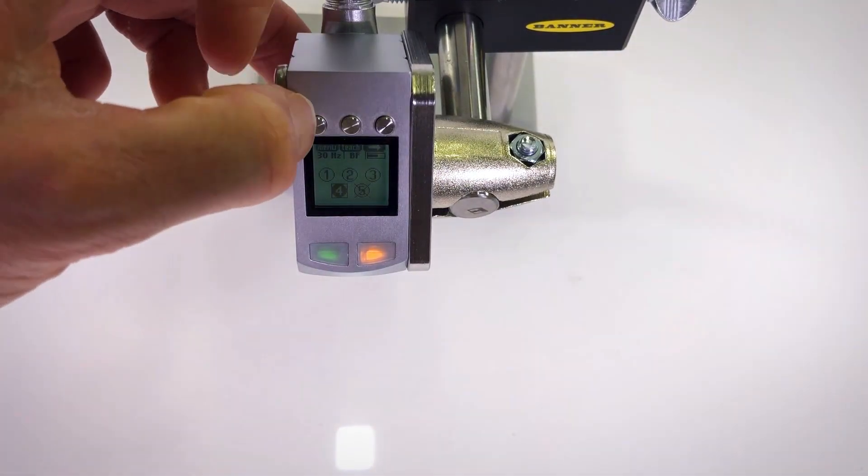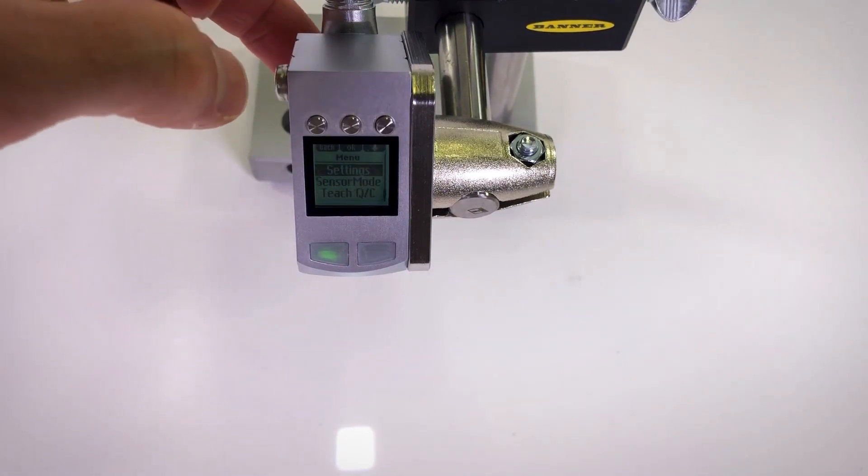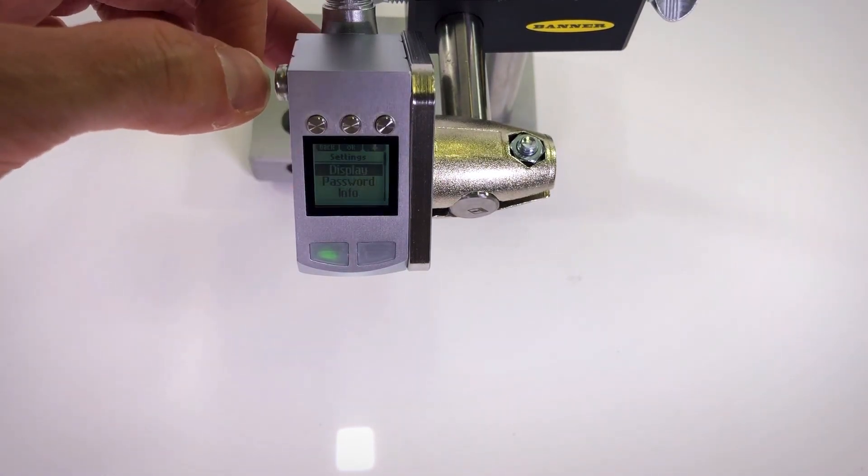To set up the sensor for color mode, I will first reset the sensor to factory defaults within the LCD menu. Changing the color mode will also clear any taught color conditions.